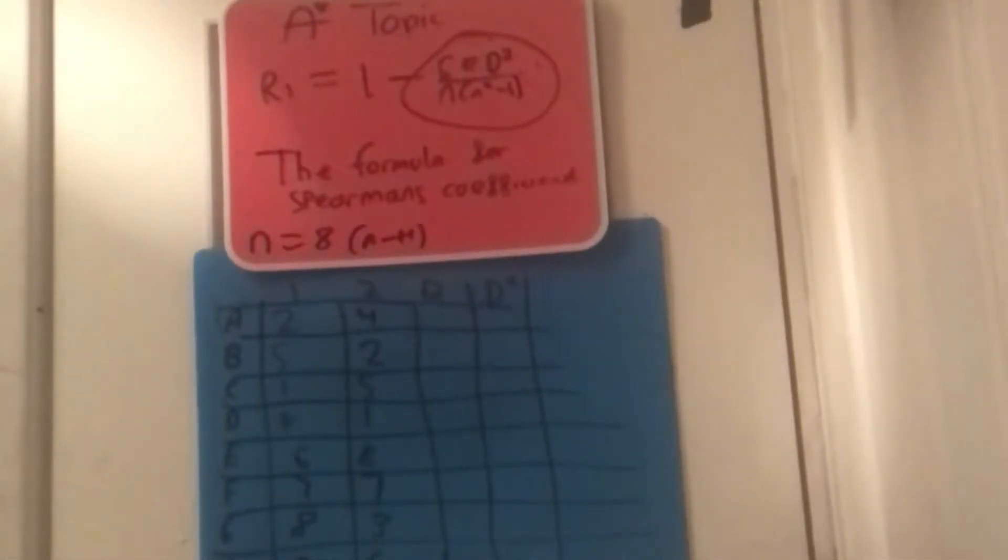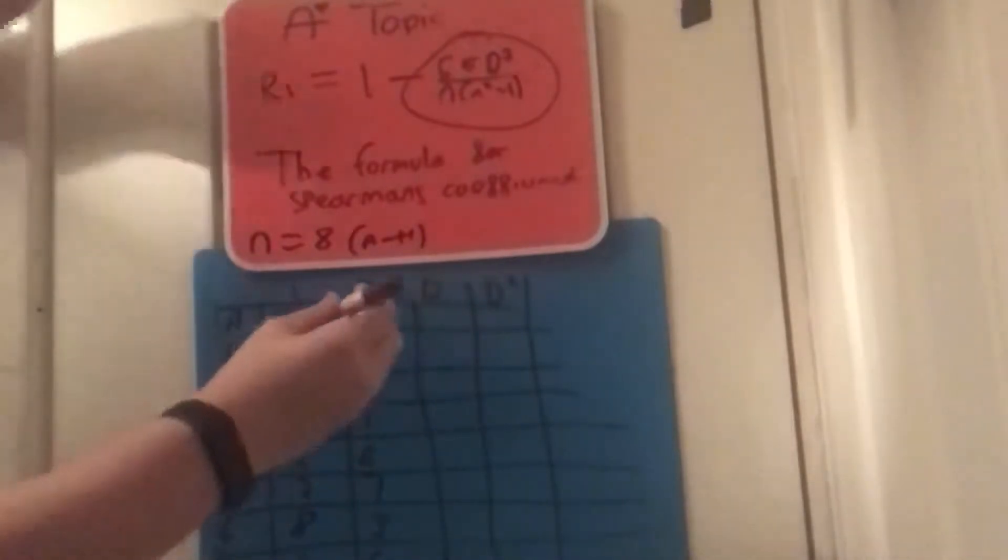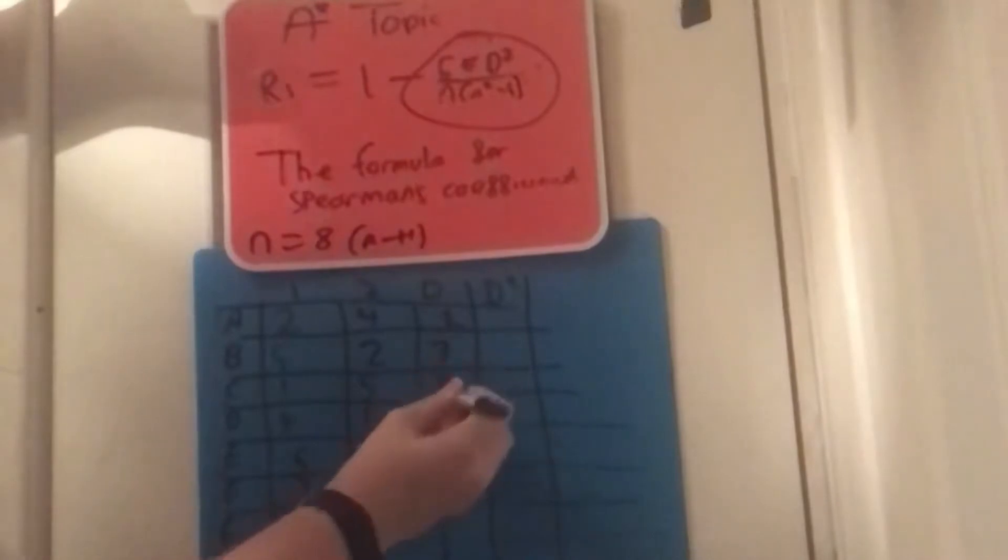Now we'll be using Spearman's coefficient and let's see what we get. So the first thing that we do is we find the distance or the range between judge 1 and judge 2's answers. So the answer to that is 2, then 3, then it's 4, and then it's 3, then it's 2, and then it's 0, and then it's 5, and then it's 3. There we go.